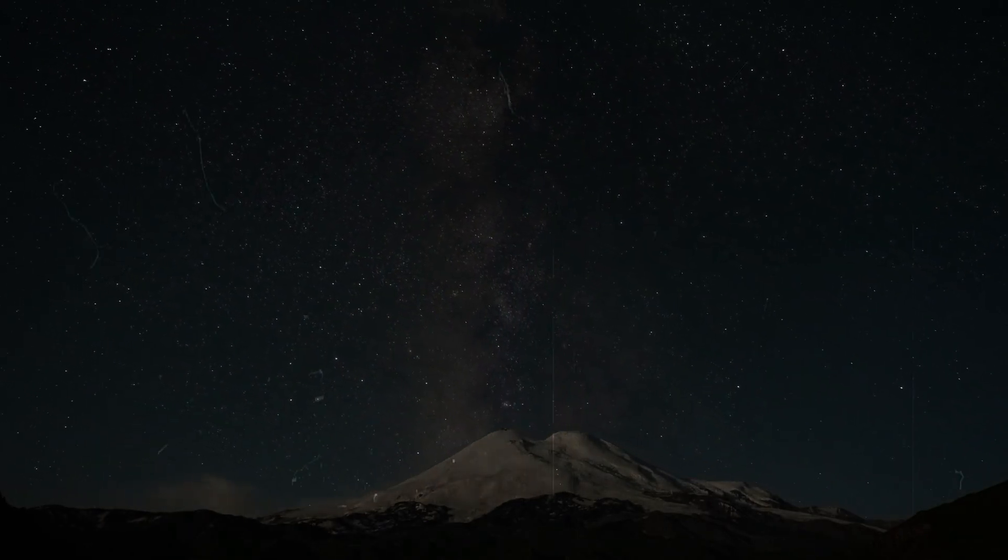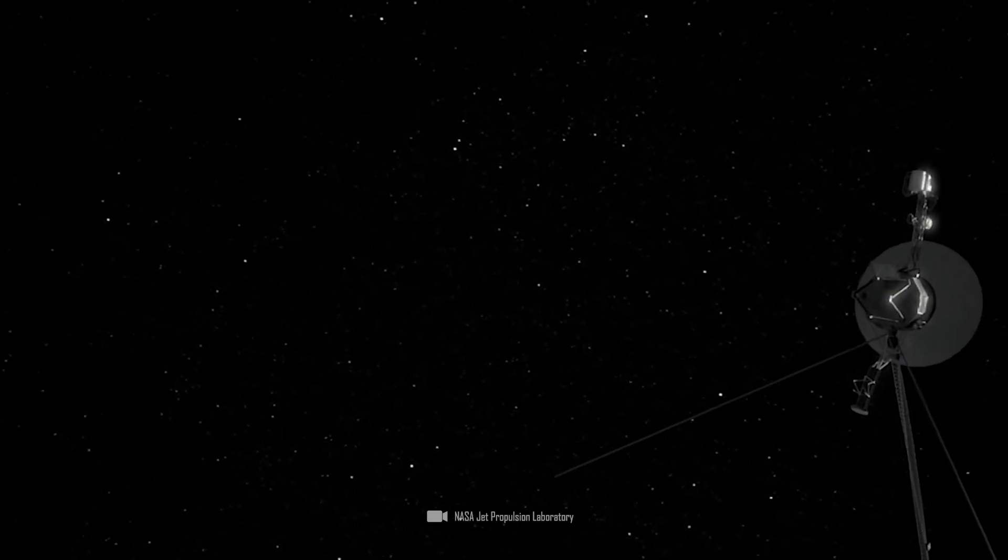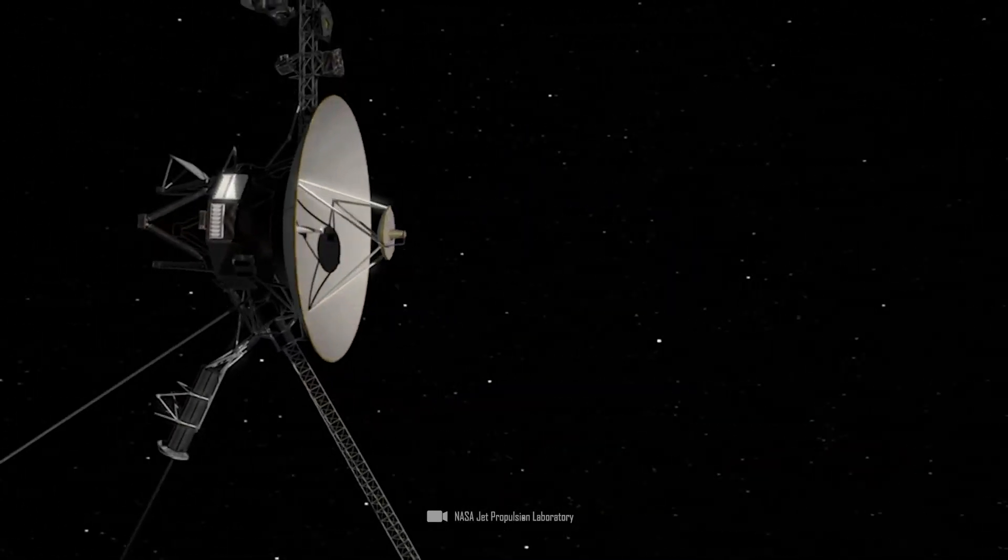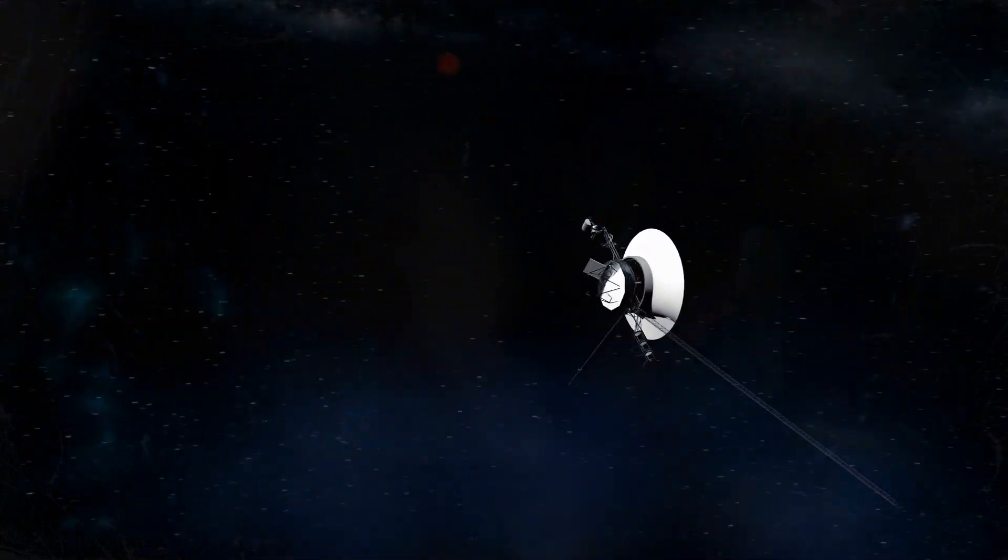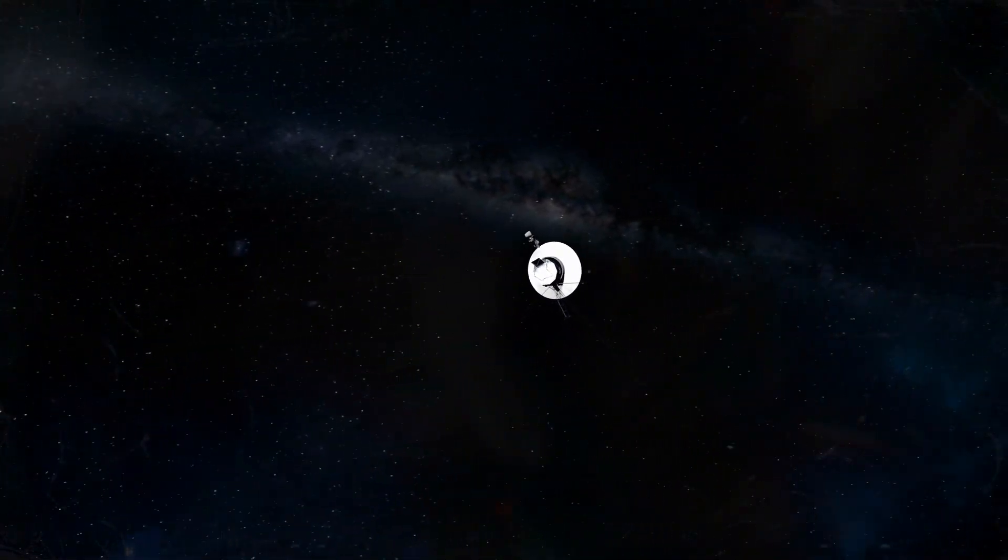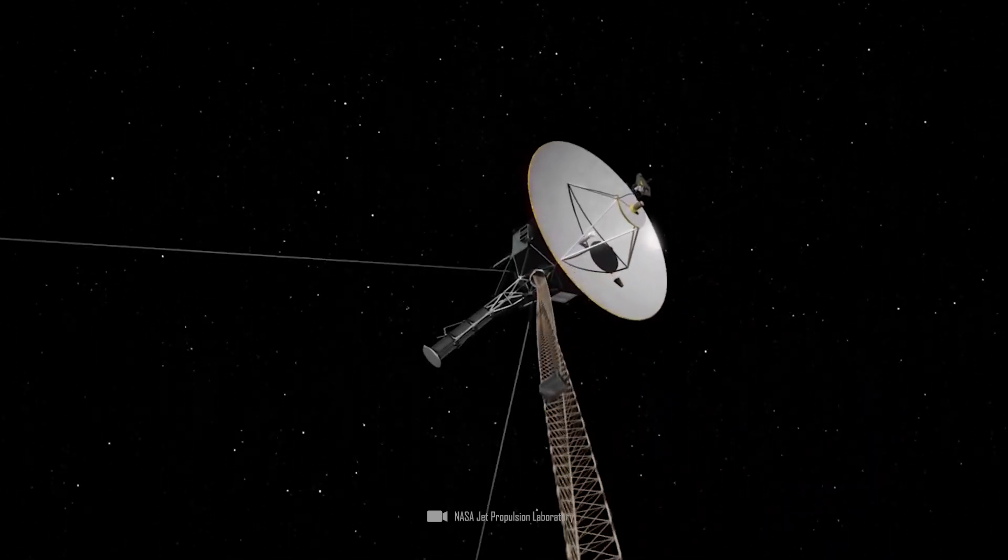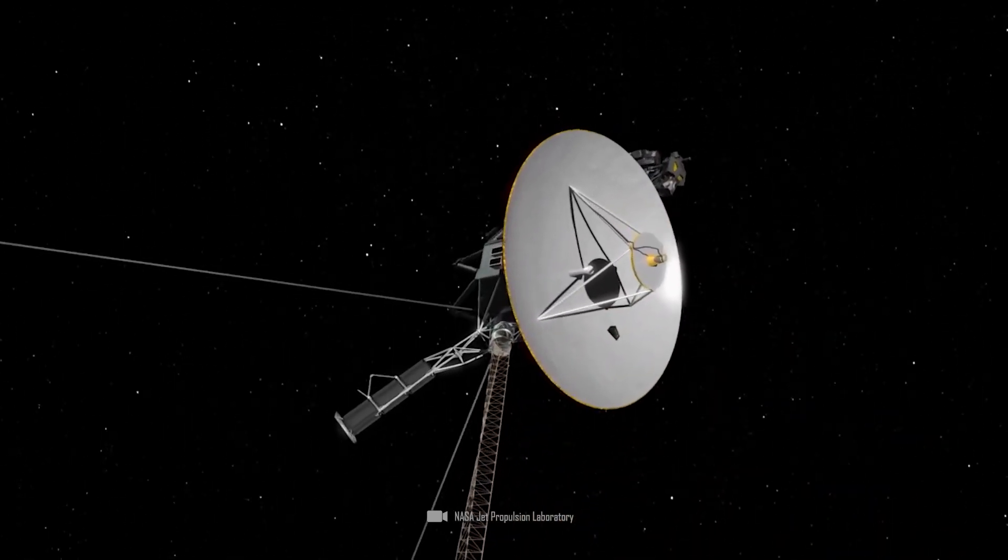When Voyager 1 arrived there, 35 years had passed since its launch. No one would have thought that the Voyager probes would come this far, and they are still going. On April 5th, 2024, Voyager 1 was 24.39 billion kilometers from the sun and Voyager 2 continues its journey at 20.37 billion kilometers.